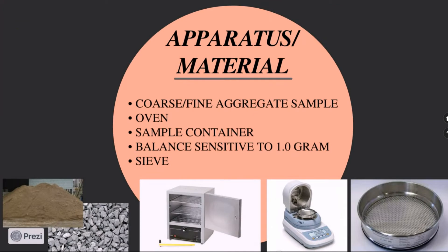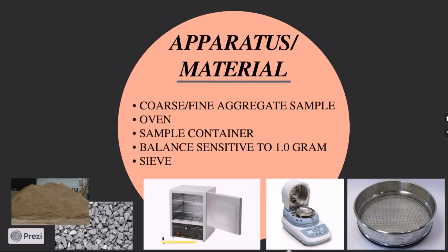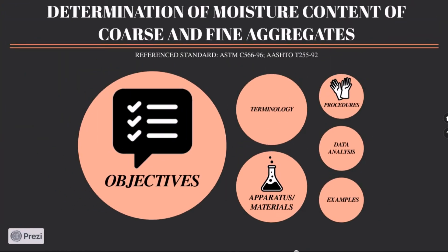Of course, we need coarse aggregate sample or fine aggregate sample, but in this case, we need coarse aggregate, an oven, a sample container, a balance sensitive to 1 gram, and a sieve. Next are the procedures.